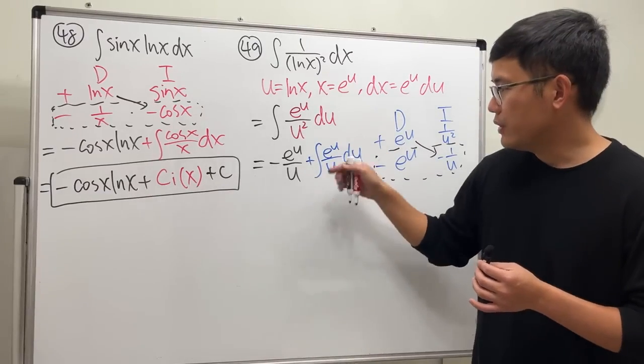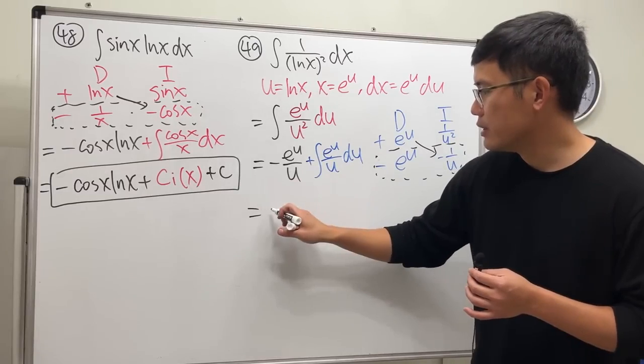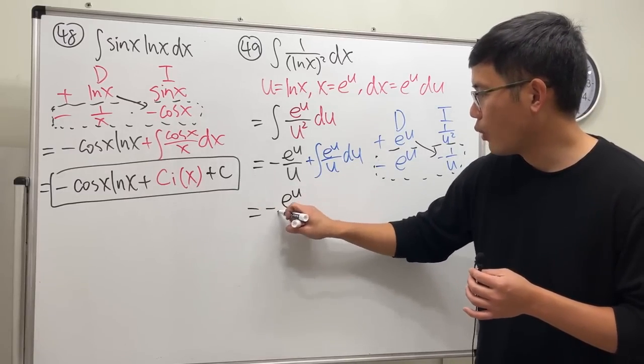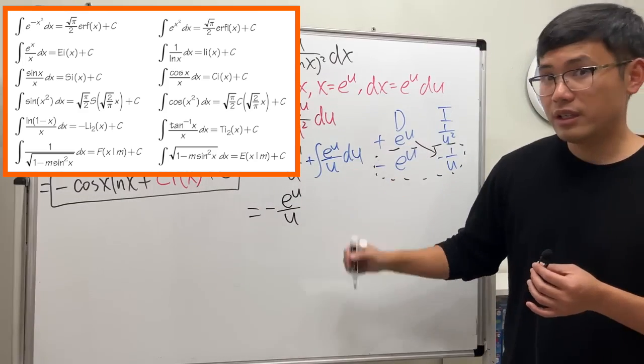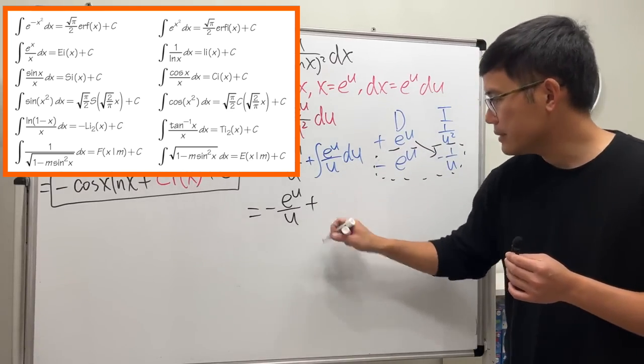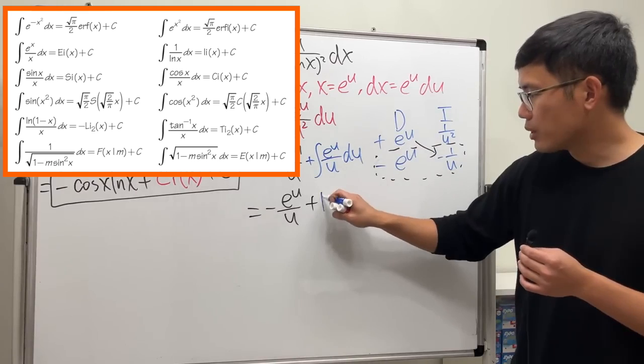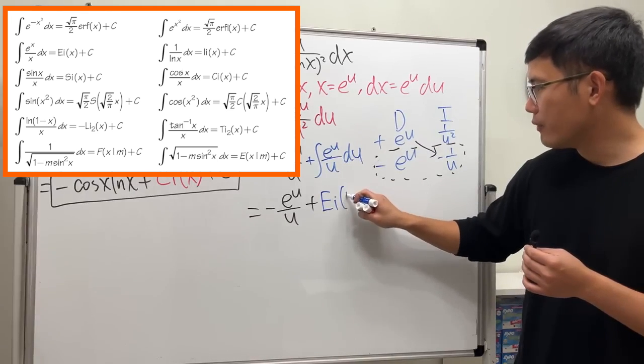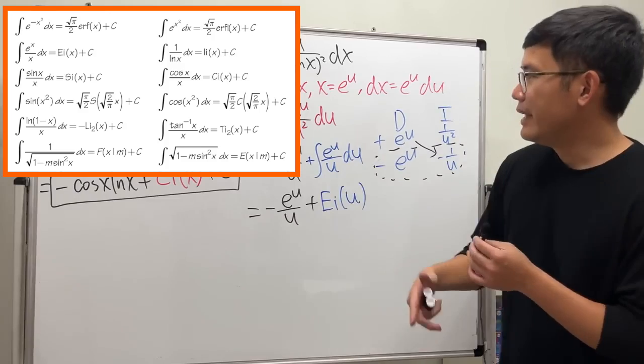Let's finish this first. So this right here is still negative e to the u over u, but this right here is the exponential integral, so we will have to add exponential integral, Ei of u.